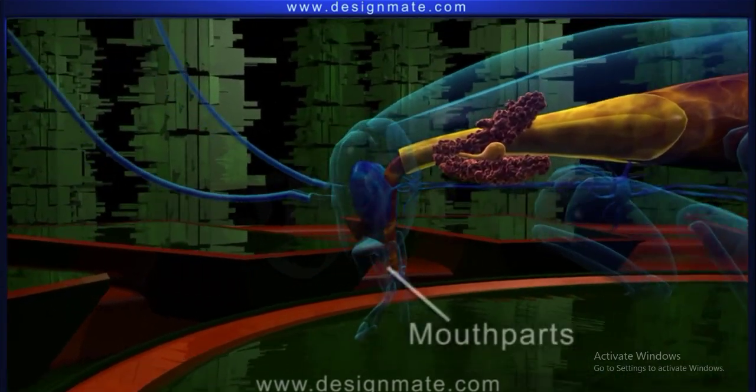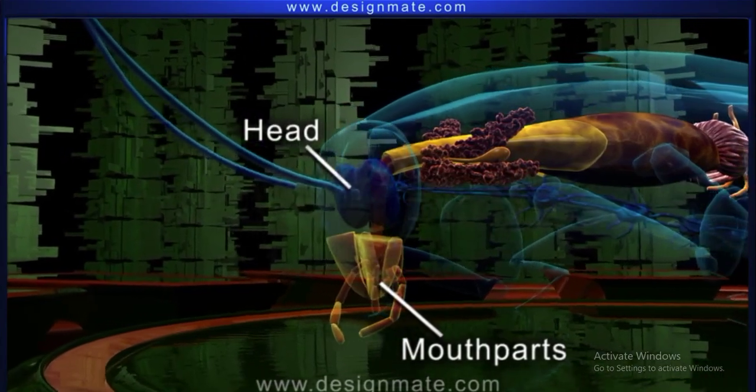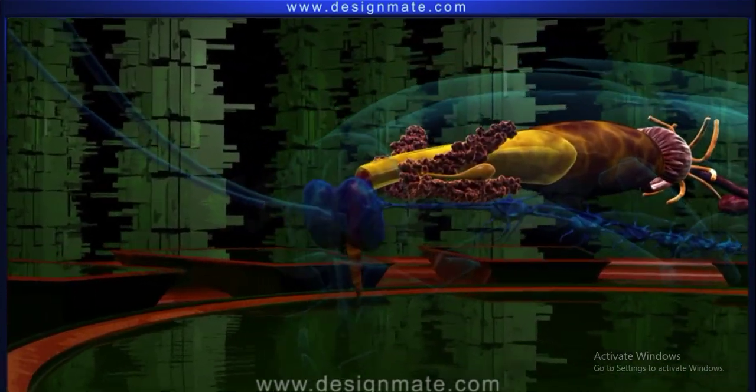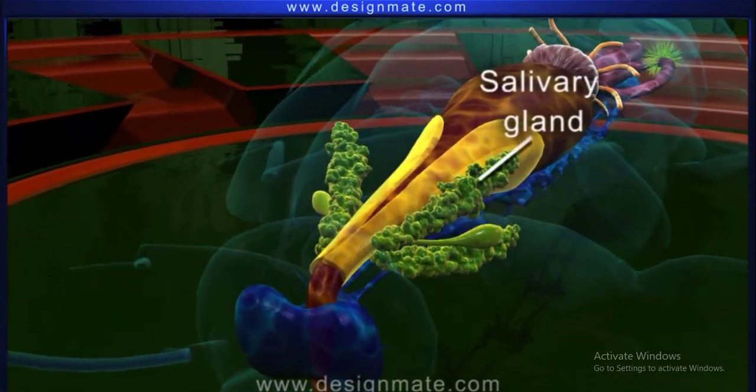The mouth made up of mouthparts is located at the anterior end of the head. Lying on either side of the hypopharynx is a pair of salivary glands.